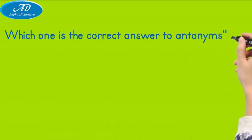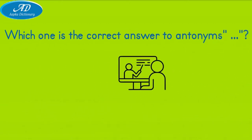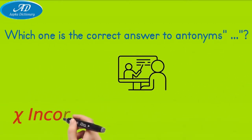Which one is the correct answer to antonyms? Chi — incorrect (red color). Square root — correct (green color).